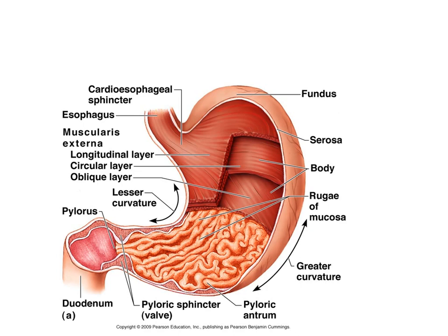The stomach has three muscle layers: the outer longitudinal muscle, the middle circular muscle, and the inner incomplete oblique layer.